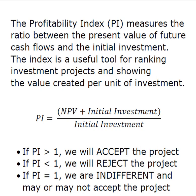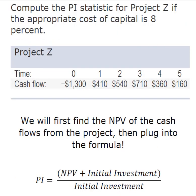So let's work an example. We have a project with a cost of capital of 8%. Our initial investment is the cash flow at time zero — that's a $1,300 investment. We have a five-year project with a series of five positive cash flows. The first thing we're going to do is find the NPV of the cash flows from the project and then simply plug it into the formula.